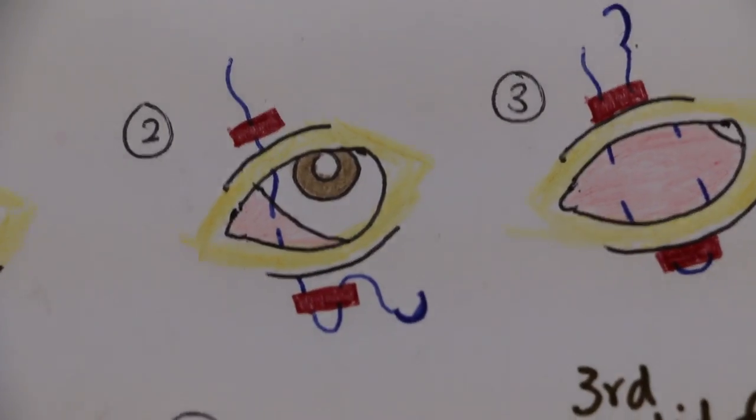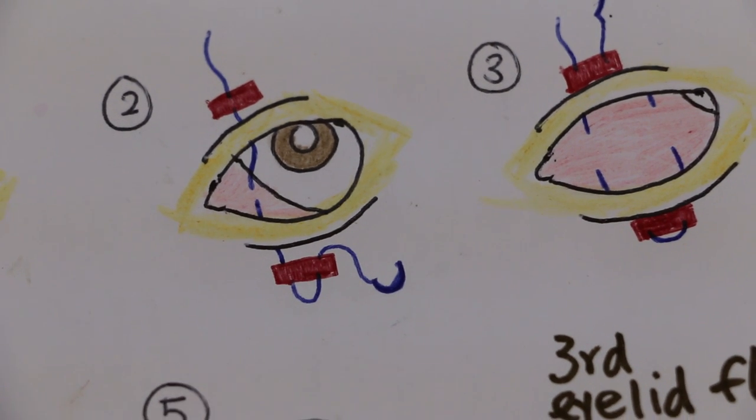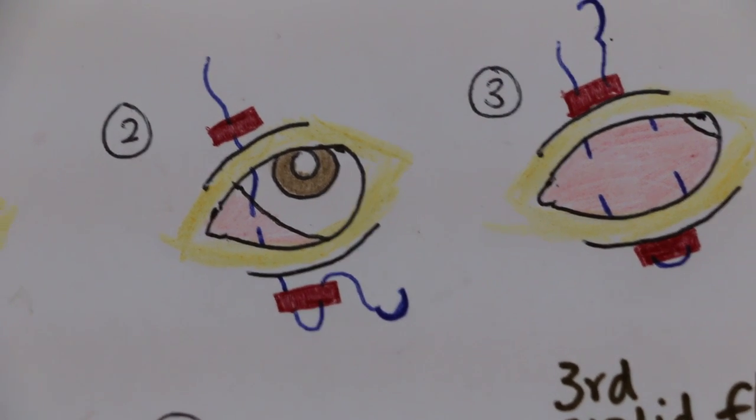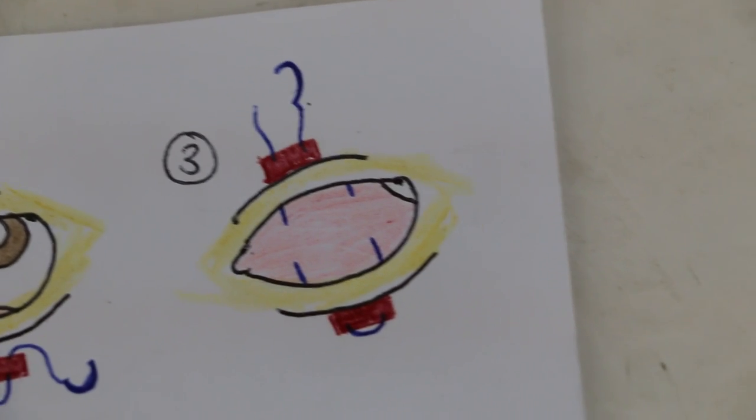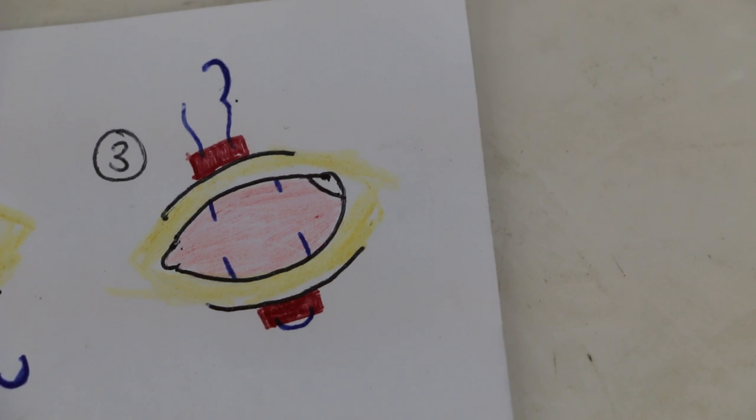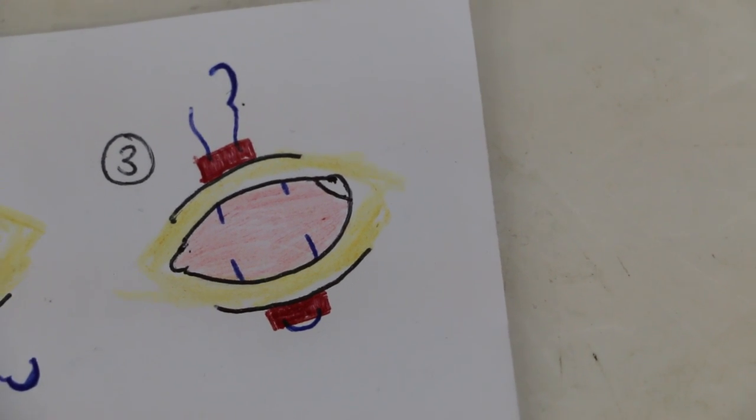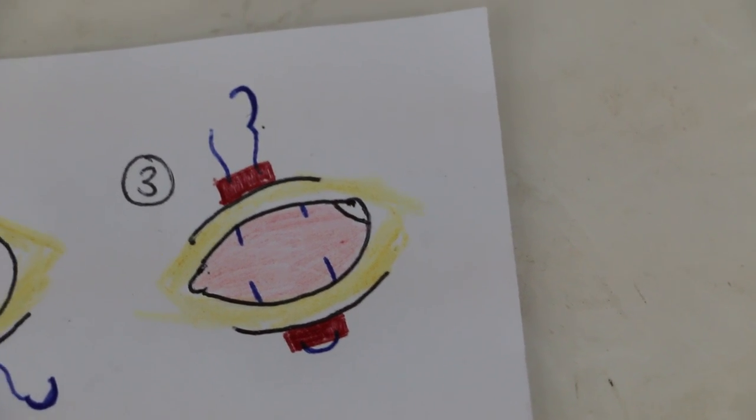Image two will be the lower eyelid, the stint. Go through the stint, the third image. Then it goes back to the lower eyelid, in the lower eyelid, through the third eyelid flap, and then comes up.